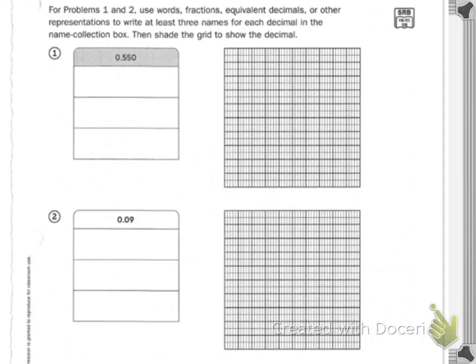You looked at this earlier today. One little square that I'm coloring in red is a thousandth. If I color in a whole square, which I'm going to do in orange, that is a hundredth. So this is a hundredth, and this is a thousandth.